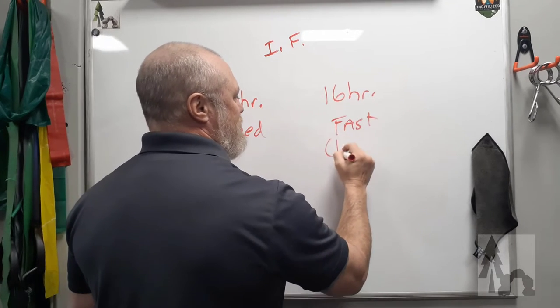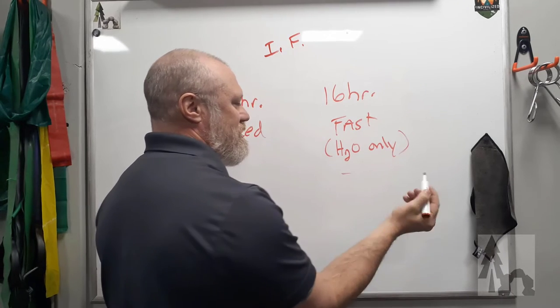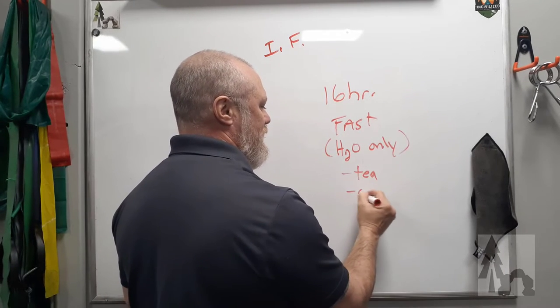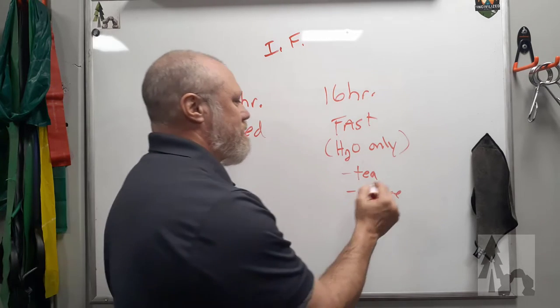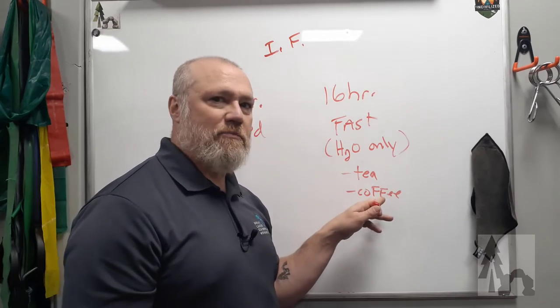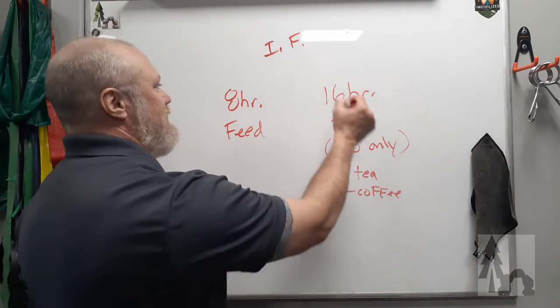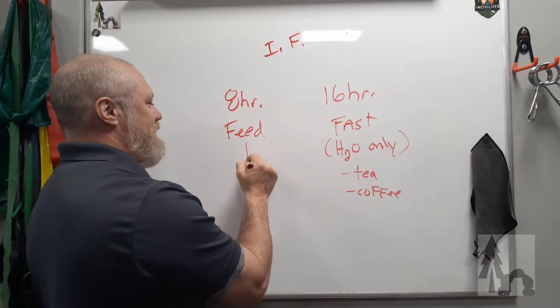Okay, and fast means water only. There are some exceptions, tea would be okay, coffee black, just that. So I guess there'd be an exception of water, they're basically water with a few leaves or some beans brewed in them, but the 16 hours you're fasted and you got eight hours to feed.